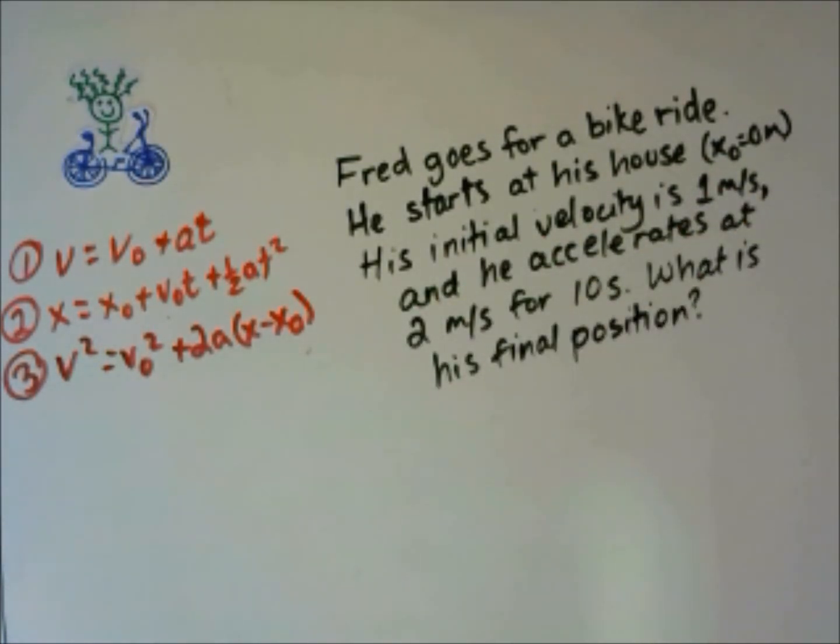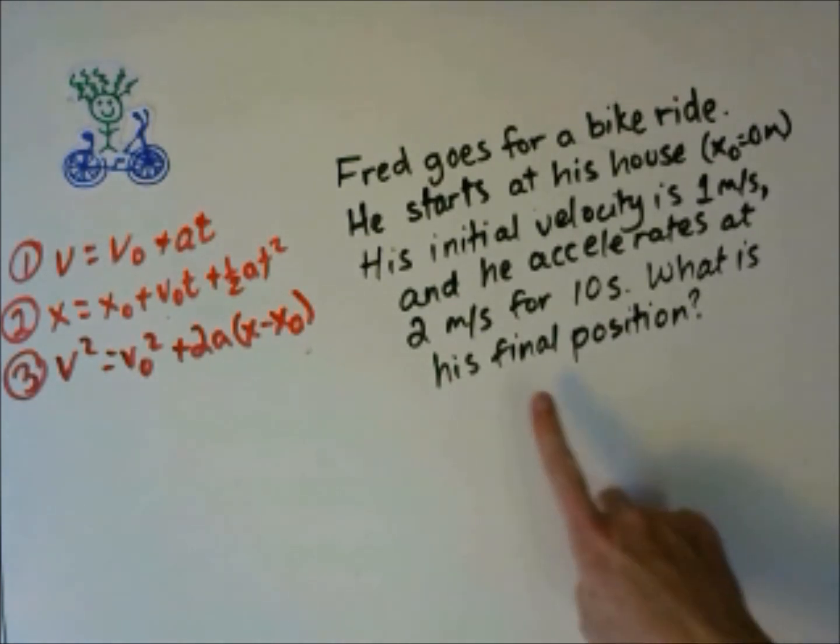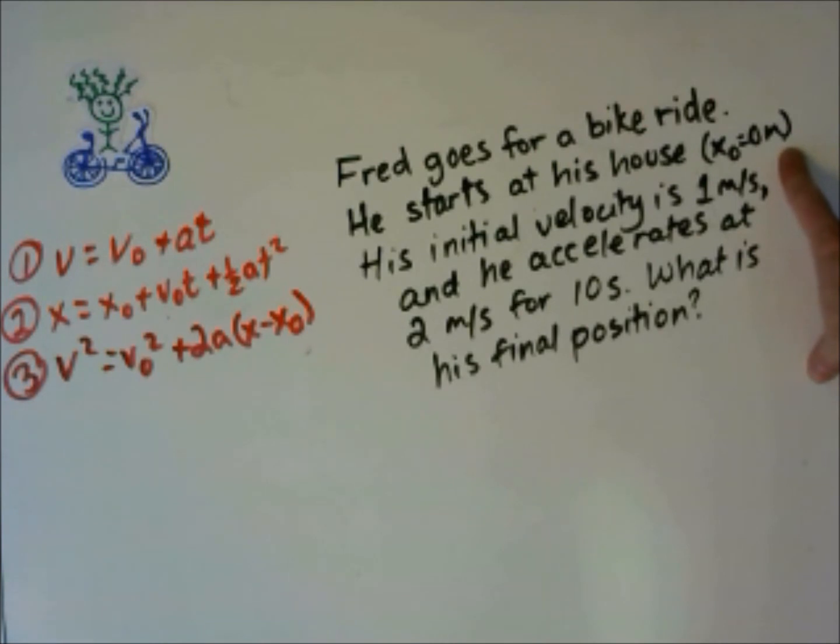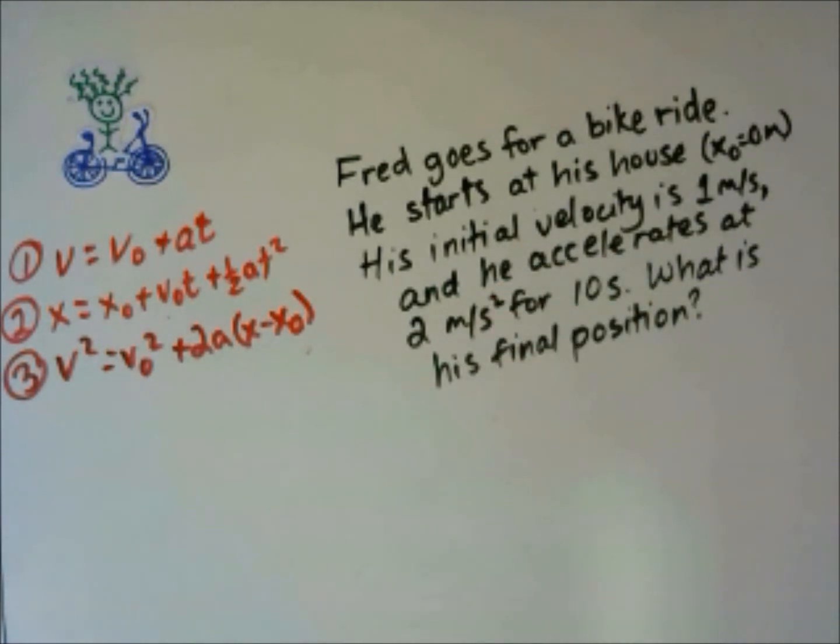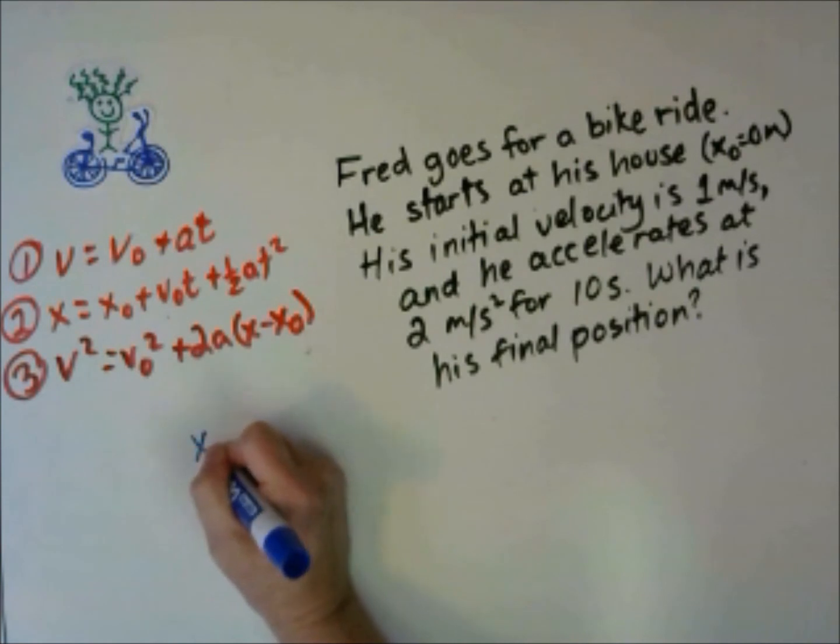Now Fred goes for a bike ride again. He starts at his house, which we define as the position of 0 meters. Unless you're given otherwise, you can usually assume x0 is 0. His initial velocity is 1 meter per second and he accelerates at 2 meters per second squared for 10 seconds. What is his final position? We're going to do the same as we did with the last problem. Look at what we know and decide which equation is the best to use.